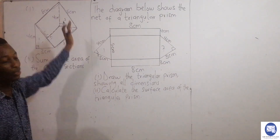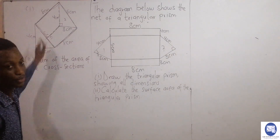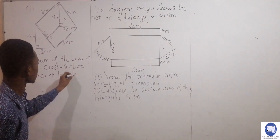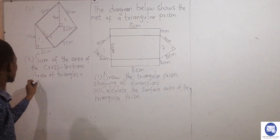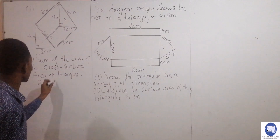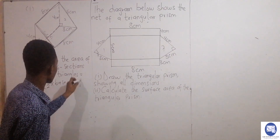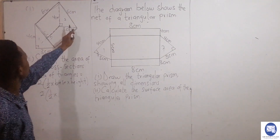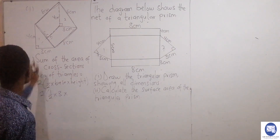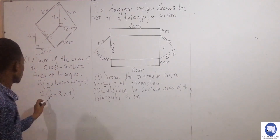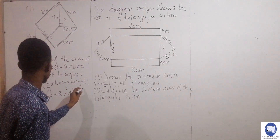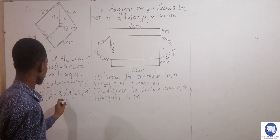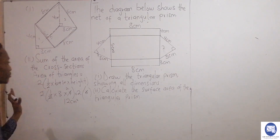I'm going to find the area of individual cross sections and sum them together. First, the area of the triangles. The triangles are two, so whatever the area is, it should be multiplied by two. The area of a triangle is half times base times height. Two times half times three times four — two goes into four two times — so one times three is three, three times two is six, and two times six gives twelve centimeters squared for the two triangles.